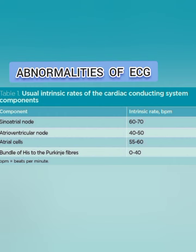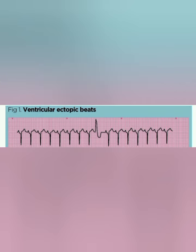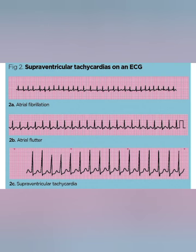If you have any queries, you can comment down in the comment section below after the end of the video. The first abnormality in the ECG that we'll see in the picture is ventricular ectopic beats. The second picture is supraventricular tachycardia on an ECG, covering three abnormalities: atrial fibrillation, atrial flutter, and supraventricular tachycardia.